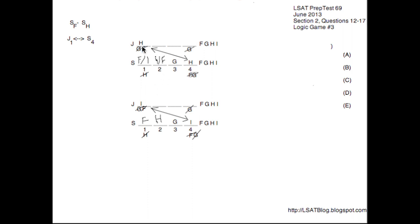For the juices row: since G cannot be on J4 and H is already on J1 in the top diagram, only I or F can appear on J4. In the bottom diagram, G can't be on J4 and I is already on J1, leaving F or H for J4. J2 and J3 remain open on both diagrams — on the top, any of I, F, or G could go there; on the bottom, any of F, H, or G. Things are a bit open-ended, but we've filled in a great deal.